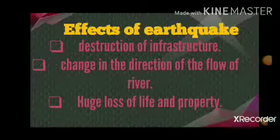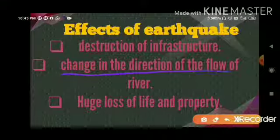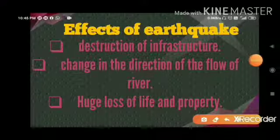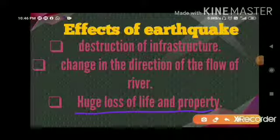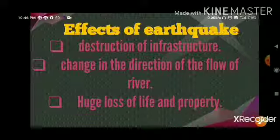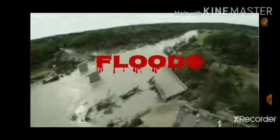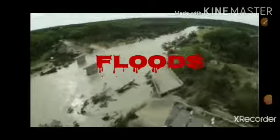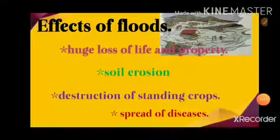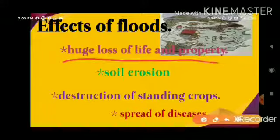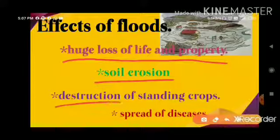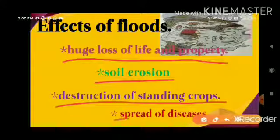Another effect is change in the direction of flow of rivers, and huge loss of life and property. The next disaster is floods. A frequently occurring natural disaster in all parts of the world is floods, due to excessive rain in the same places. The effects of floods include huge loss of life and property, soil erosion, destruction of standing crops, and spread of diseases.